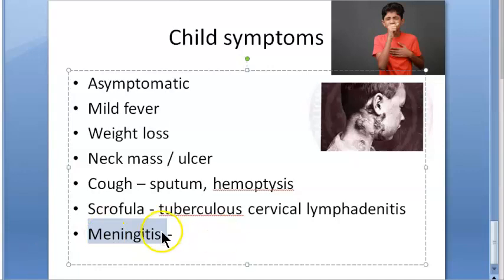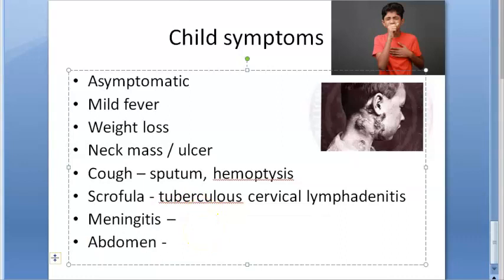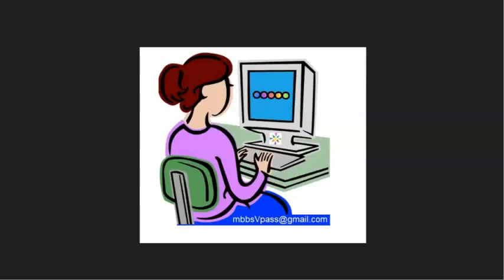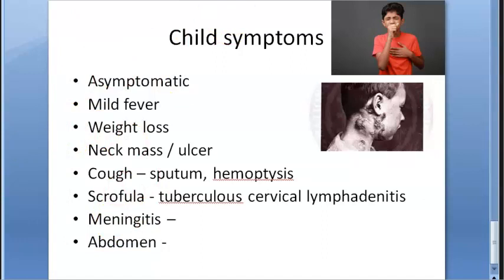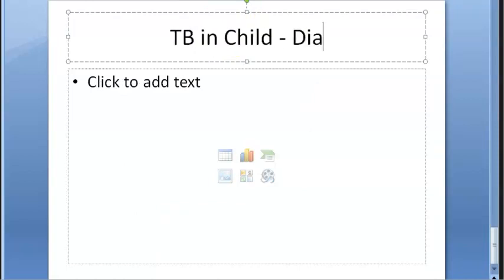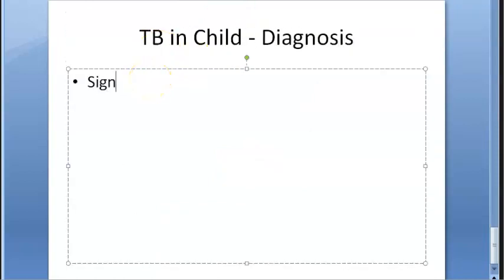If the abdomen is affected by tuberculosis, symptoms include colicky abdominal pain, vomiting, and constipation. On examination, the abdomen feels tense and doughy, with enlarged lymph nodes. In history-taking, always ask if family members have similar symptoms, particularly if the mother has tuberculosis.